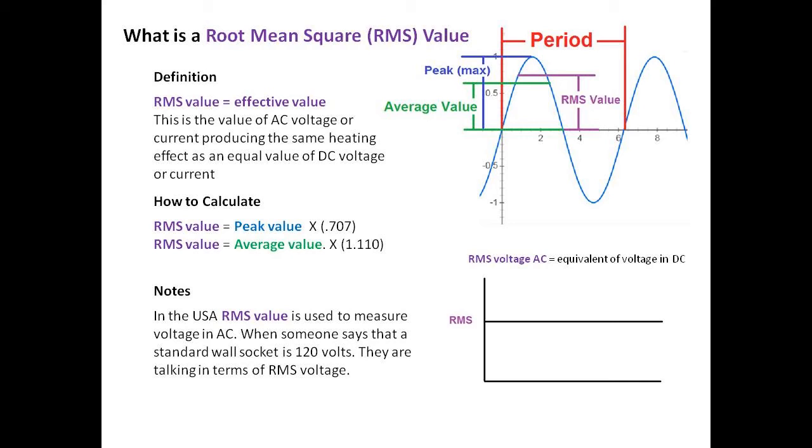So what is root mean square, or RMS value? The RMS value equals the effective value. This is the value of AC voltage or current producing the same heating effect as an equal value of DC voltage or current.